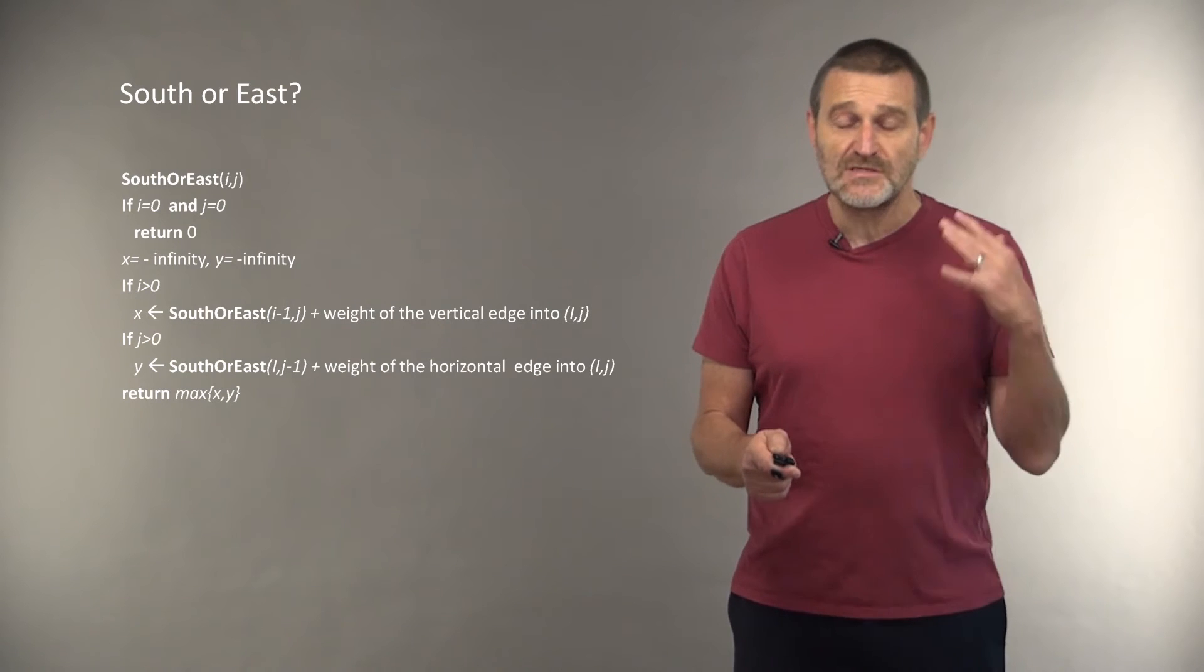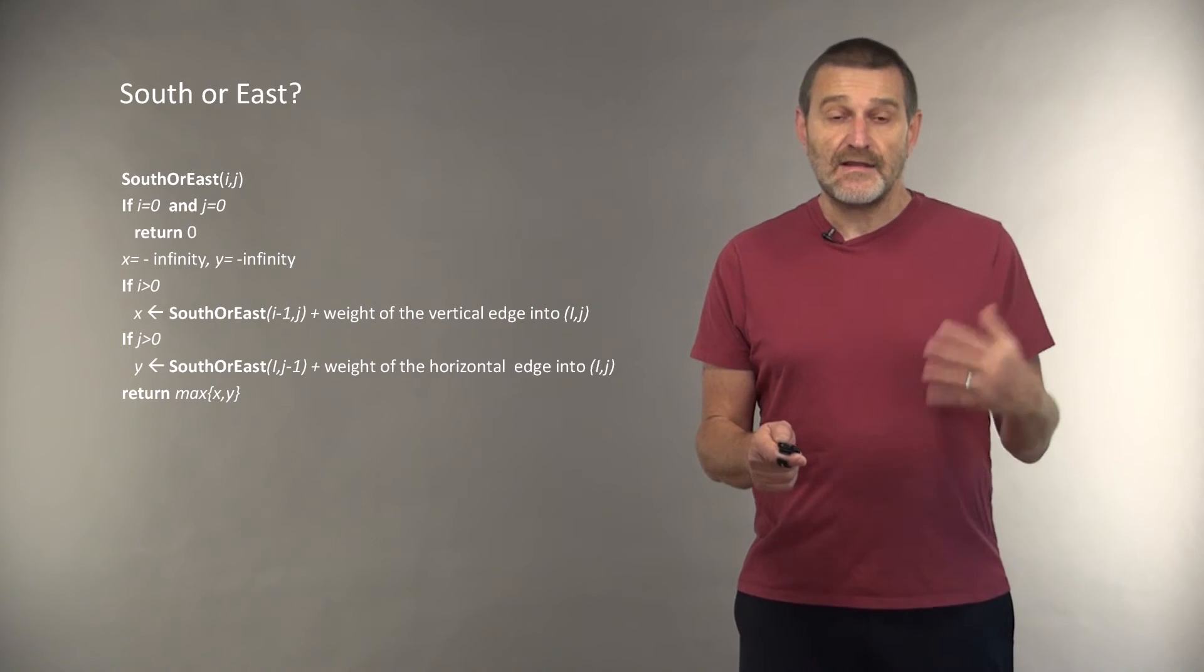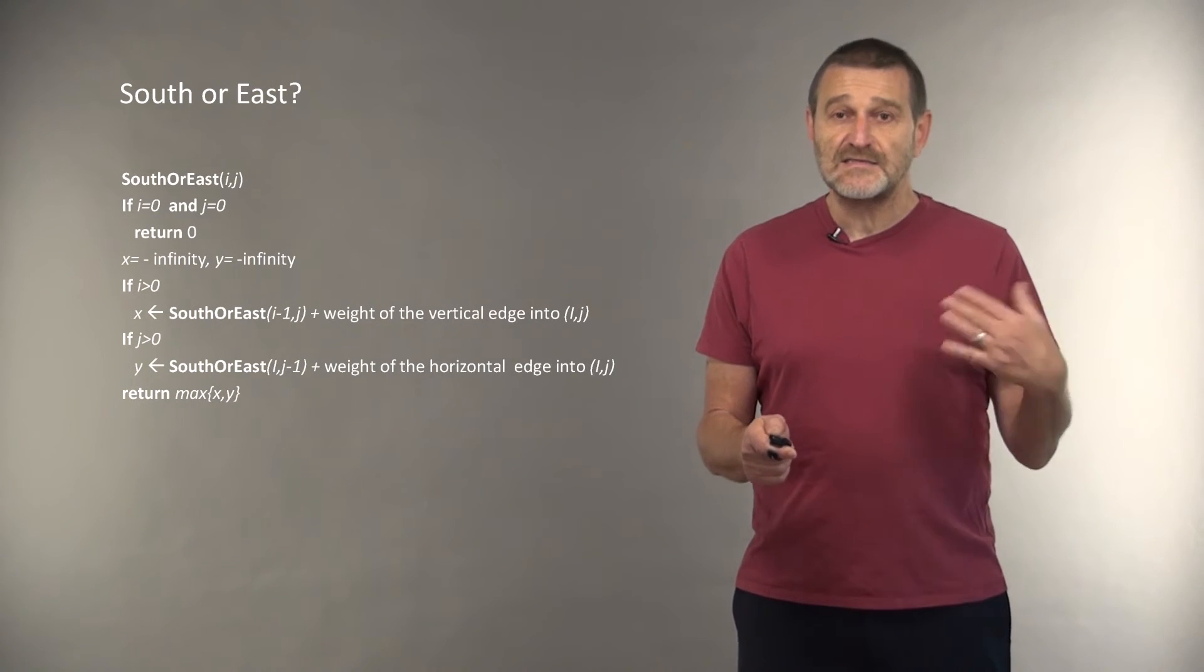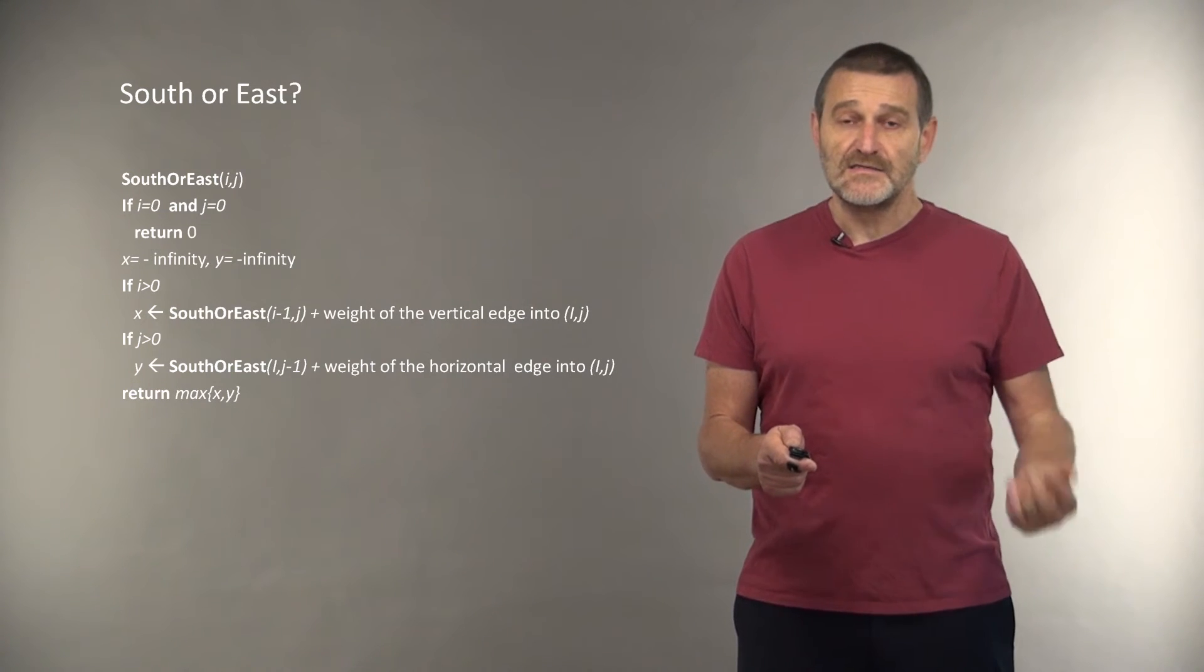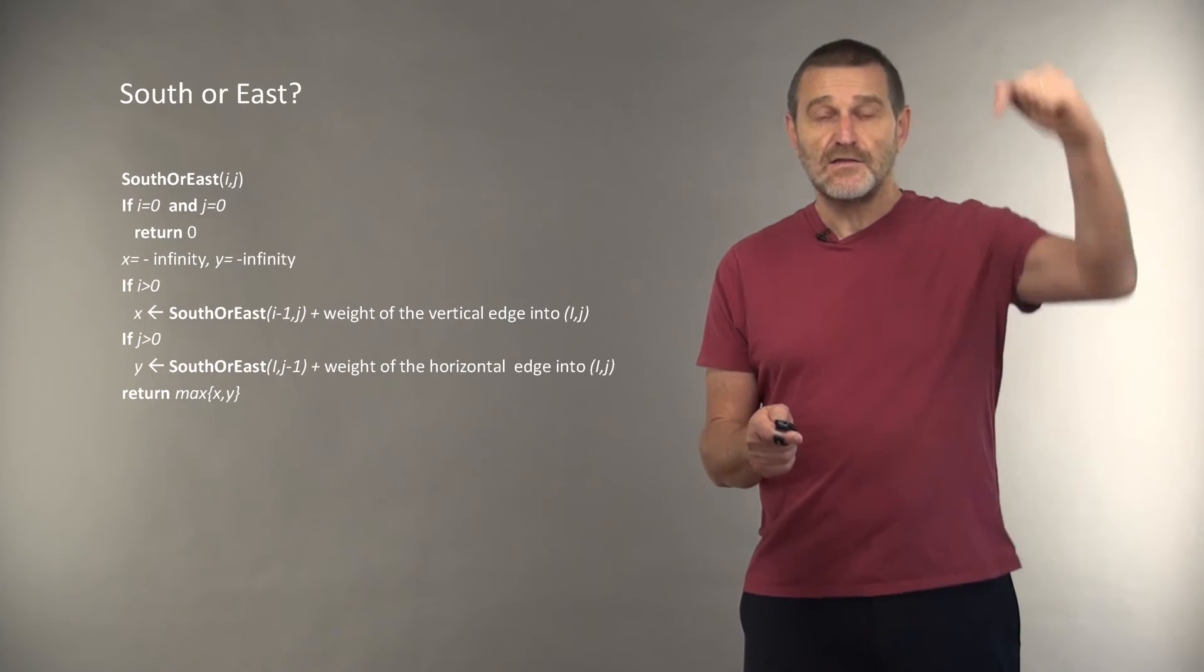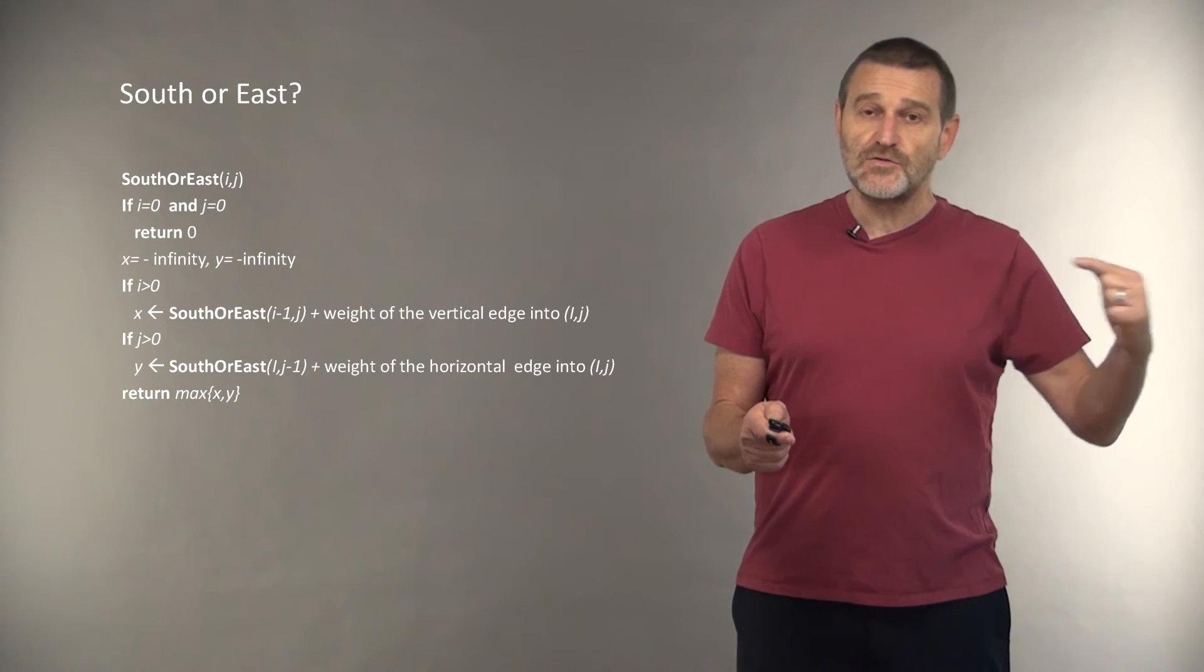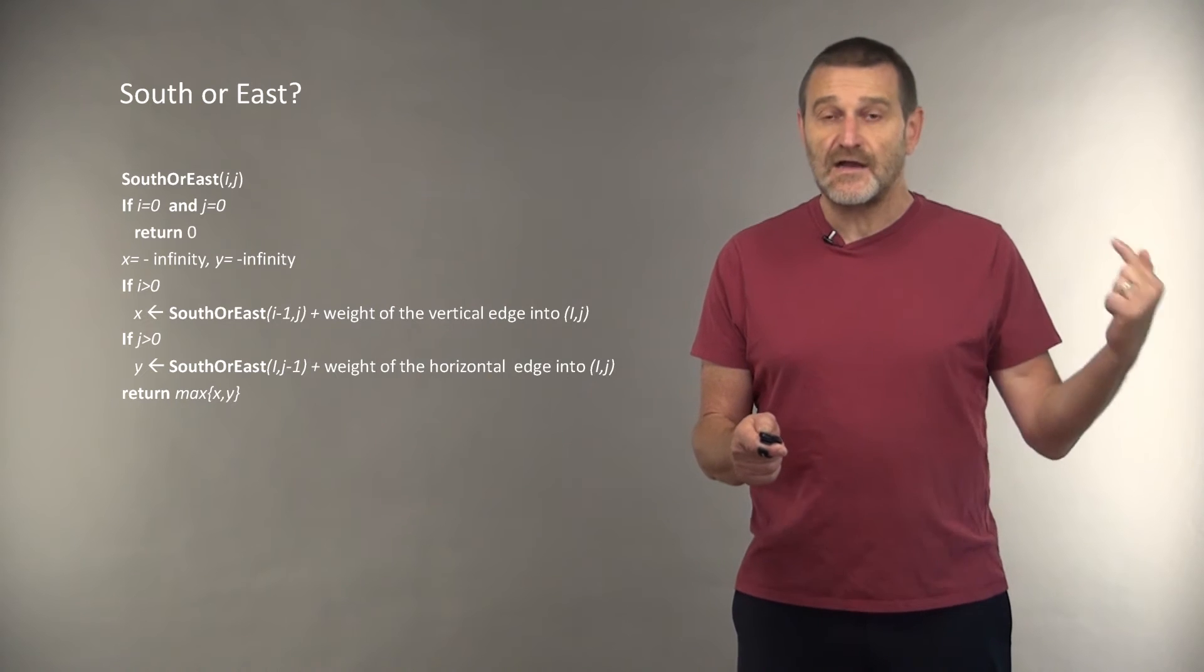And the algorithm is called SouthOrEast. And the only thing this algorithm does is compute the alternative between two scenarios: moving to node (i,j) using a vertical edge or moving to node (i,j) using a horizontal edge.